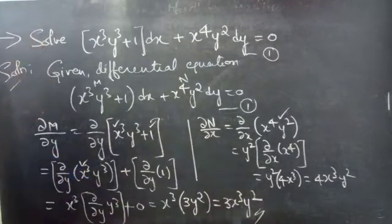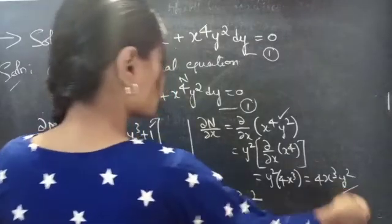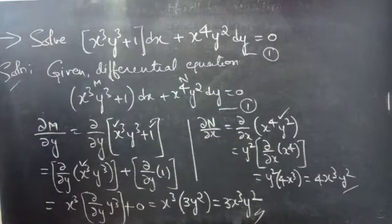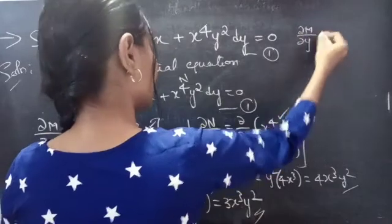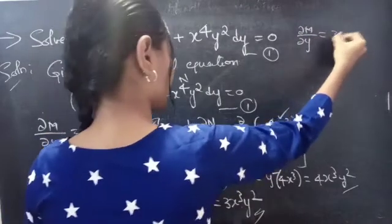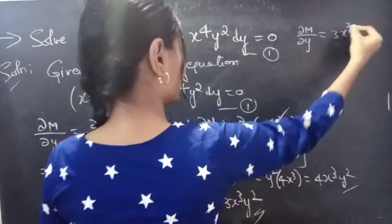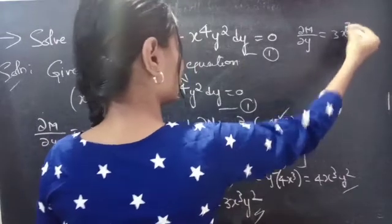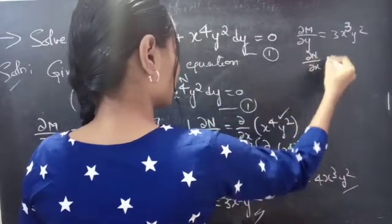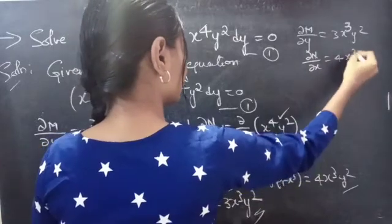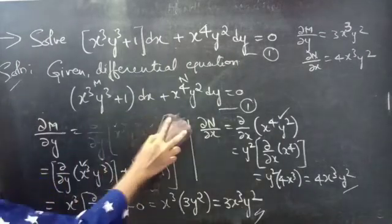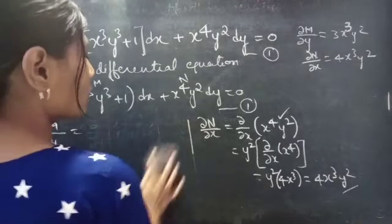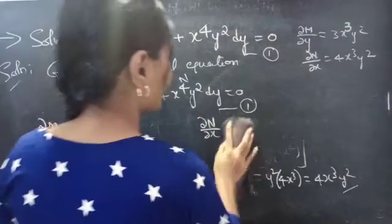It is clear that ∂M/∂y is not equal to ∂N/∂x. Therefore, ∂M/∂y is not equal to ∂N/∂x. From this, we can say that equation 1 is a non-exact equation.